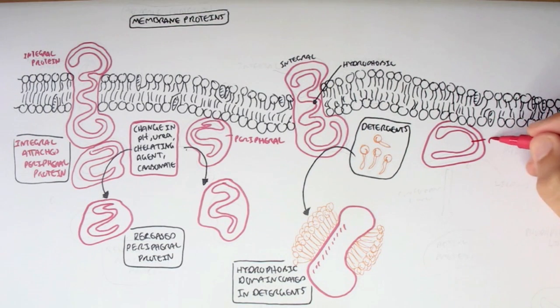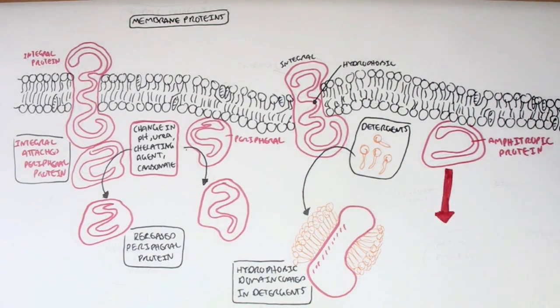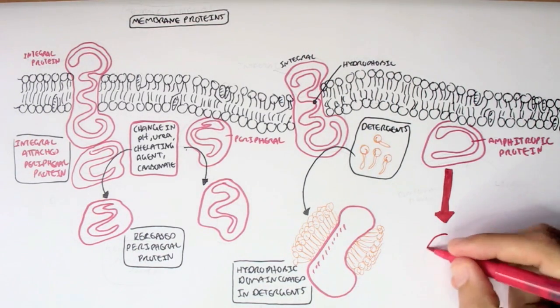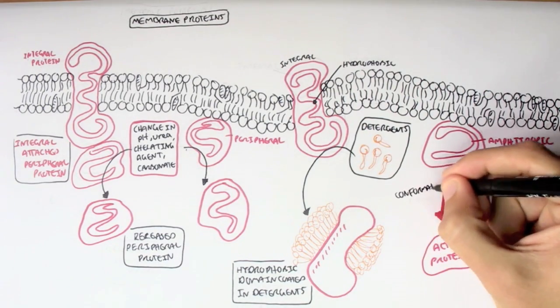Now, another type of receptor which I did not mention in the first video is called the amphitropic protein, and what this protein does is it actually faces the intracellular fluid and responds to a conformational change of some sort and actually has a biological reaction, so it can go back and forth from the membrane protein.